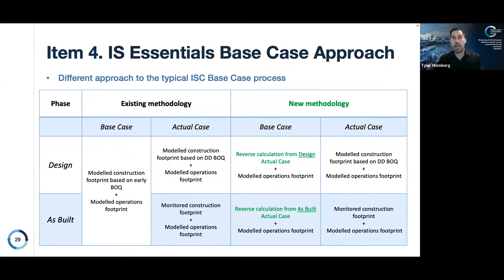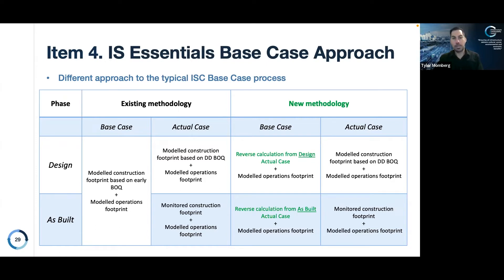Another development is an update to the base case. This update has two main benefits: it reduces the amount of modelling required by projects as it's more based on actual data, and secondly it increases the accuracy of the base case as a result of using more actual data and less modelling. The previous approach required projects to model a base case or business-as-usual construction footprint plus an operations footprint at very early stages of the project. The assumptions and modelling at early design stages very rarely match the final product.